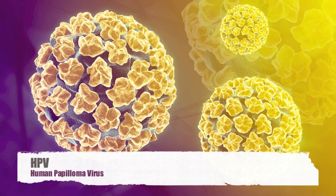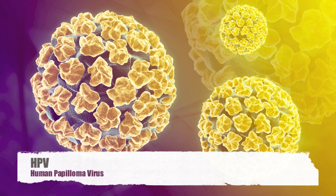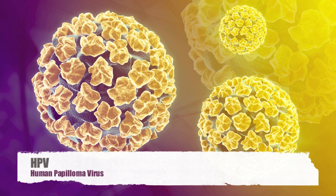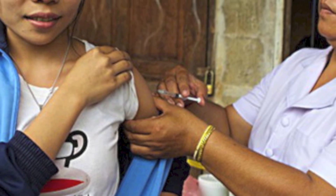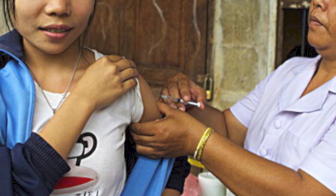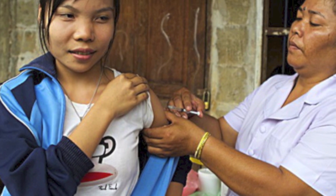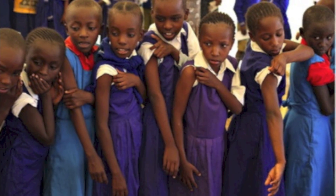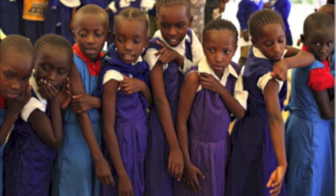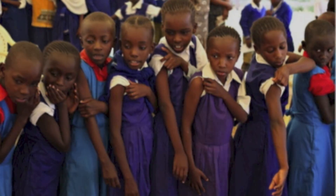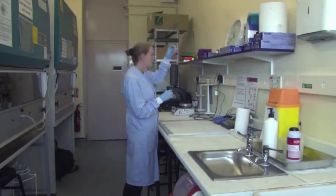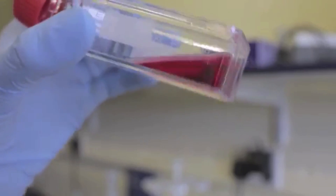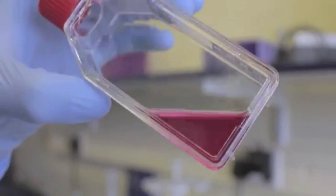Cervical cancer occurs when cells of the cervix are infected with HPV, or human papillomavirus. The virus causes the breakdown of a tumor suppressor protein that inhibits cell growth when DNA is mutated. Cervical cancer is still the third most common form of cancer in women worldwide, but a vaccine has been developed to prevent the spread of some forms of cancer-causing HPV. This vaccine was developed using cells from a woman who died of cervical cancer over 50 years ago. Her name was Henrietta Lacks.